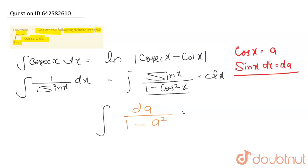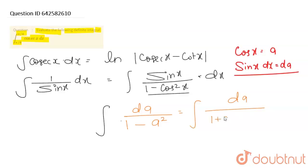ठीक है, dt upon 1 minus t²। अब इसका formula हम सभी को पता है। अगर हम इसे लिखना चाहें, तो dt upon (1 plus t)(1 minus t) — इस form में लिख सकते हैं।